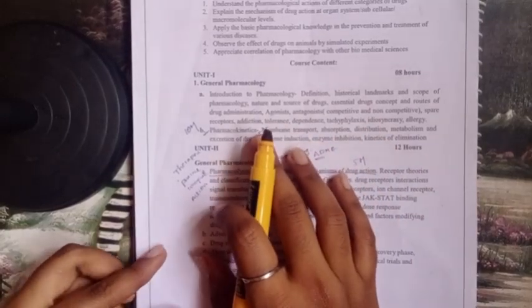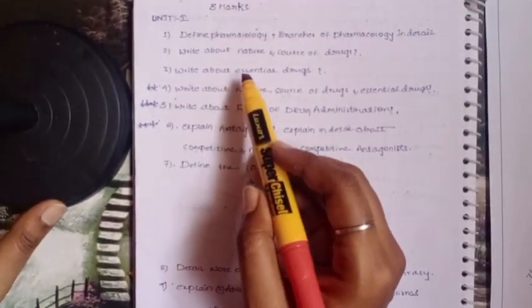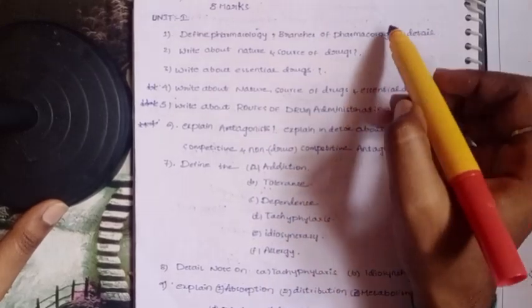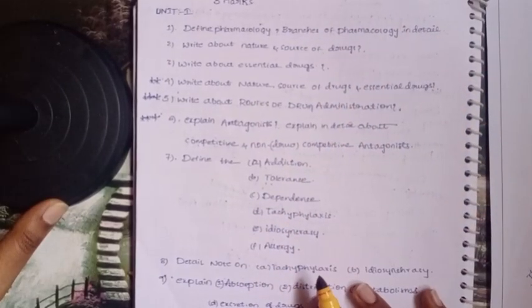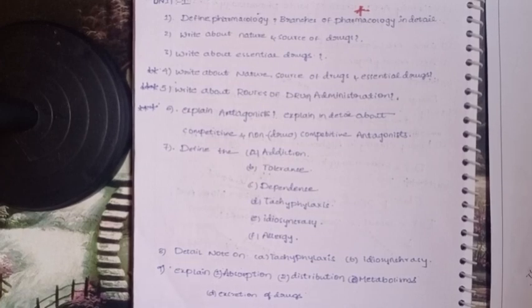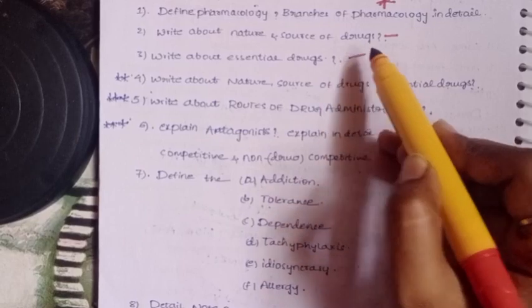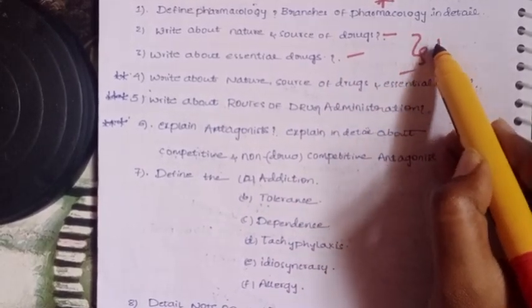Unit 1 includes: explain 5 mark questions, write about nature and sources of drugs, write about essential drugs. I've highlighted these. If you search previous papers, you'll find this question appears in one of three patterns.